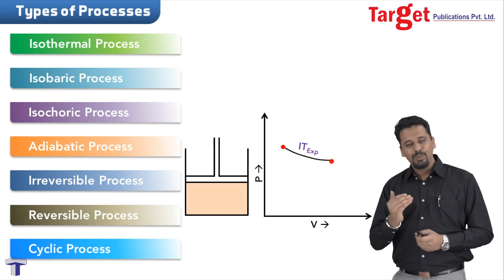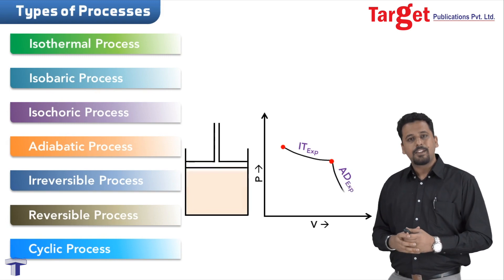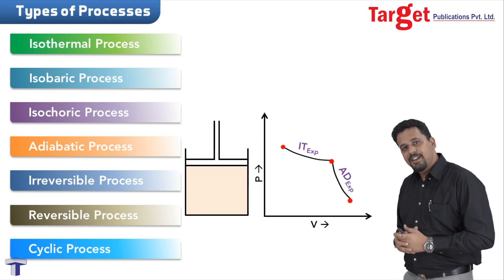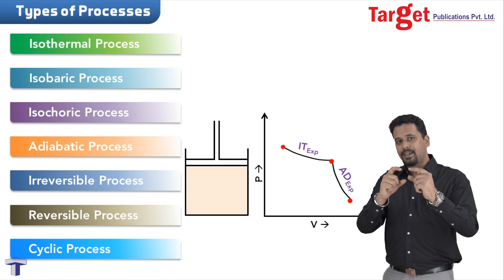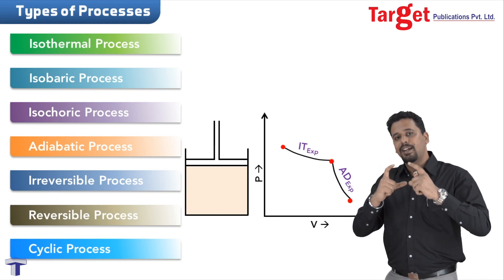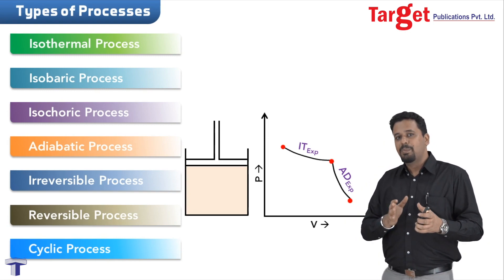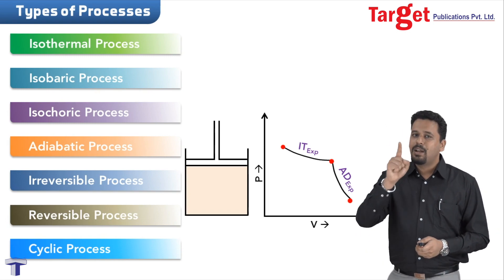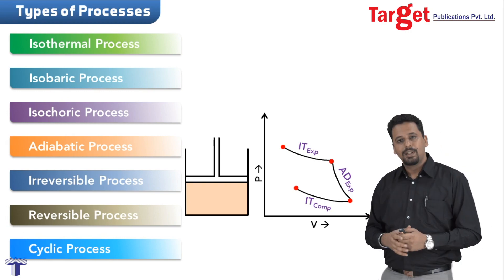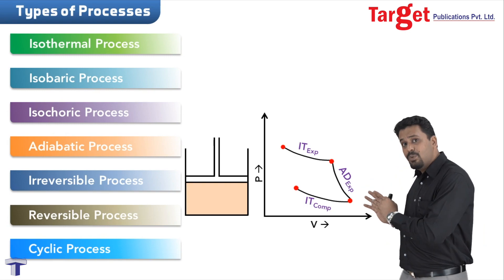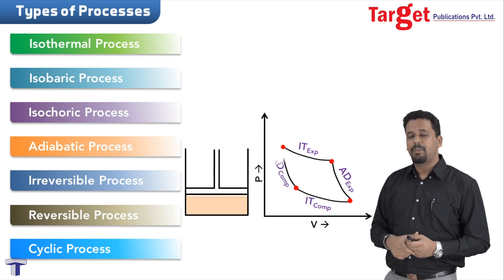Next, we expand the gas adiabatically — no exchange of heat between system and surrounding. Then we compress the gas isothermally: pressure increases and volume decreases. Finally, we do one more compression, this time adiabatically. What I have described is actually called the Carnot cycle, supposed to be the most efficient form of an engine.